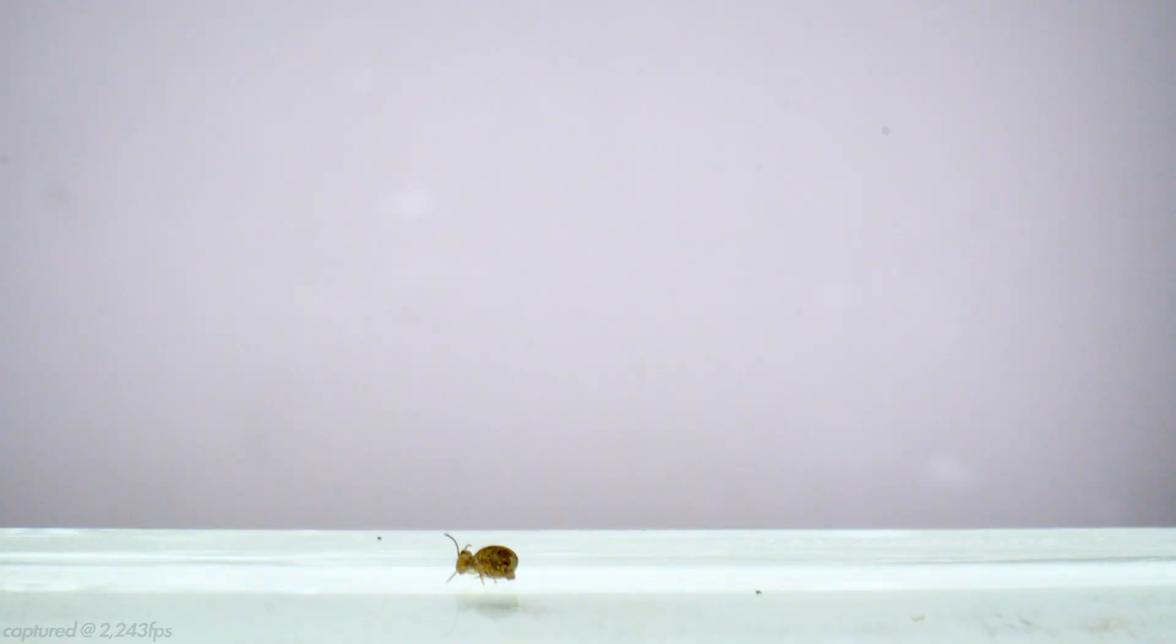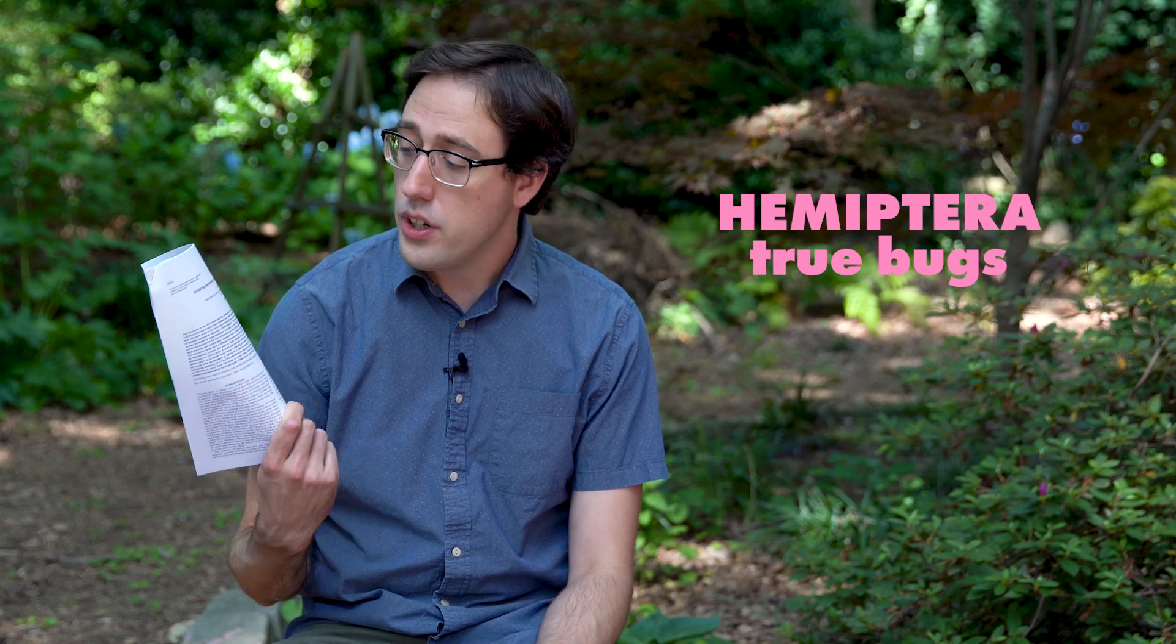A few months ago, I put out a video about springtail jumps. Springtails are tiny soil arthropods that have a spring-loaded appendage that they can use to perform really fast spinning jumps. To figure out how to best analyze that behavior, I looked at what other researchers have done to describe high-speed insect jumps. Some of the coolest research papers I found were ones on jumping insects in the order Hemiptera, and most of them, like this one, were done by Professor Malcolm Burrows.